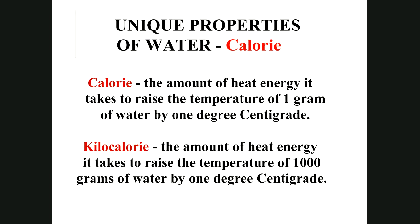A calorie is the amount of heat energy it takes to raise the temperature of one gram of water by one degree Celsius (centigrade and Celsius are the same thing). A kilocalorie is 1,000 calories — the amount of heat energy needed to raise the temperature of 1,000 grams of water by one degree Celsius.